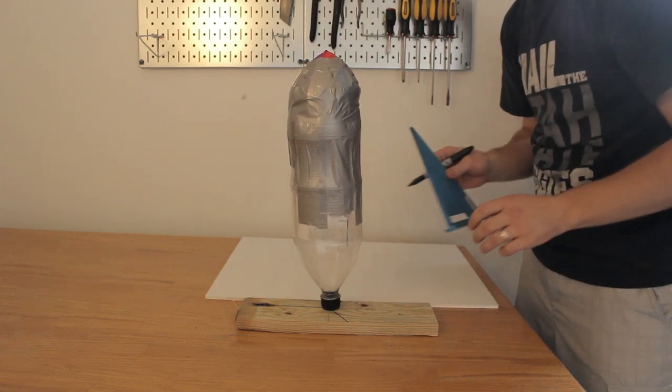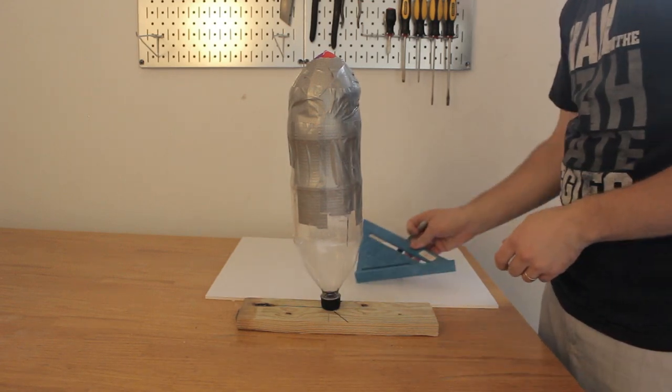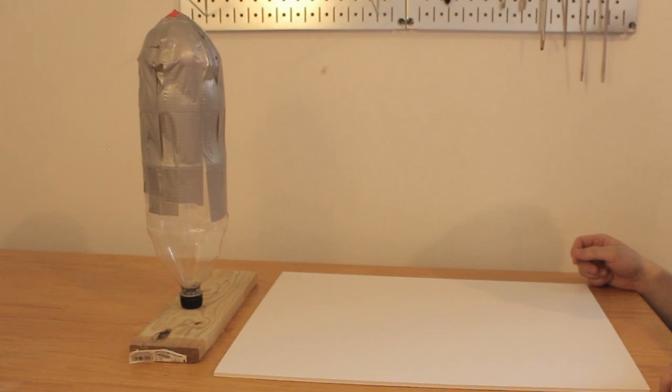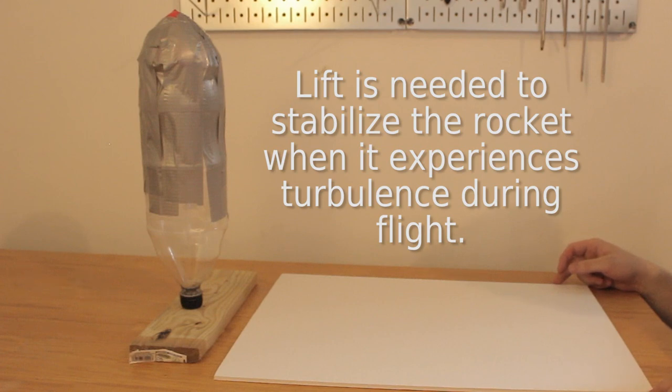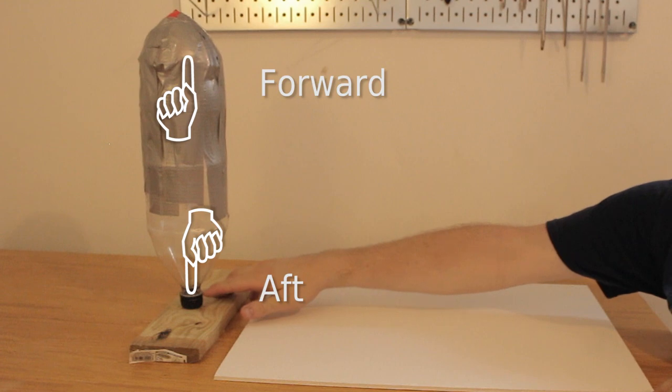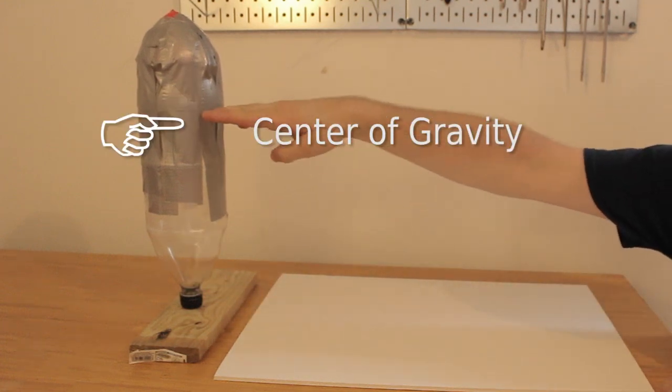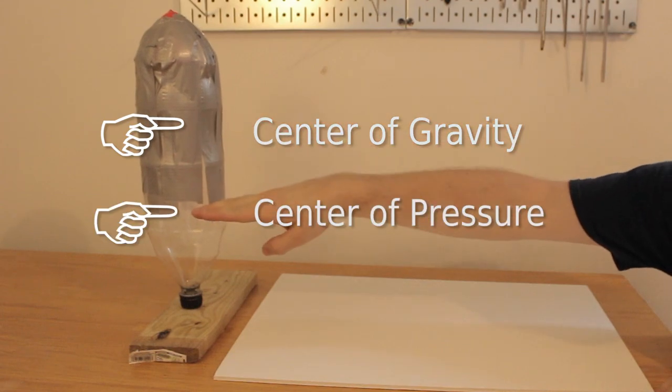So now it's time to design and attach our fins to our rocket. Now fins are extremely important for the stability of a rocket because they generate lift as well as move the center of pressure of a rocket towards the aft end or the backside of a rocket. For a rocket to be stable, you need your center of gravity to be above the center of pressure. We're going to stick to a very simple shape to make out of foam core. It's called a clipped delta shape.